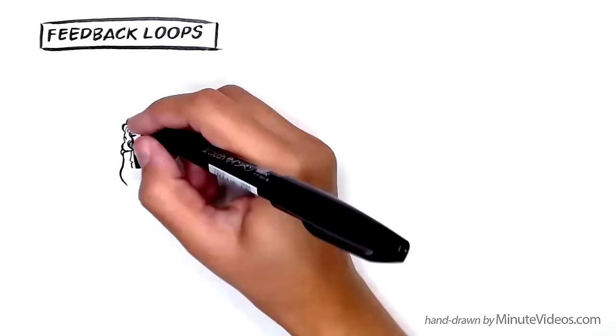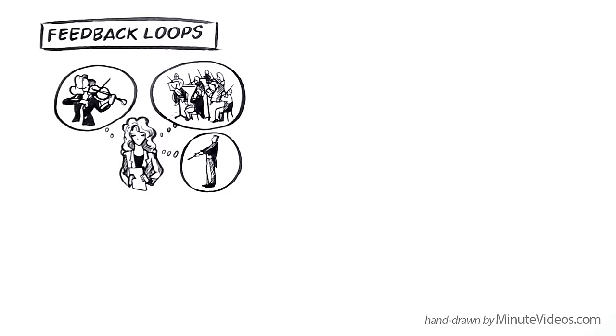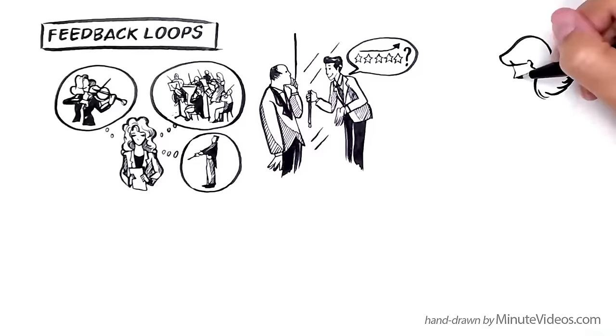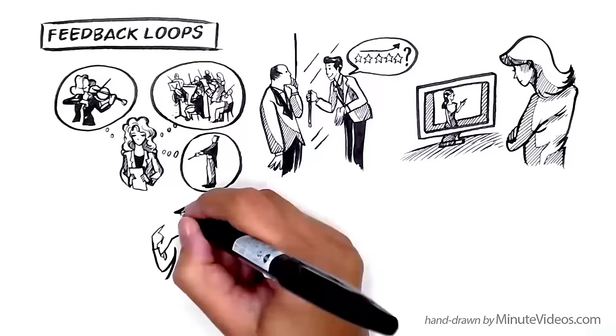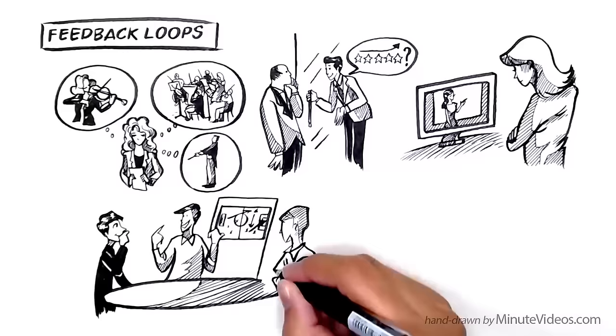They design and implement feedback loops. Some establish 360-degree surveys in which people assess themselves, their peers, and their bosses. Employees at five-star hotels ask guests for their opinions. Top schools may videotape teachers so they can later study themselves. Some even make feedback a team effort. Before any new project, they all get together to kick things off. After the project, they meet again to share and reflect on what has happened.